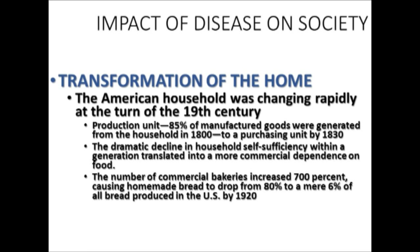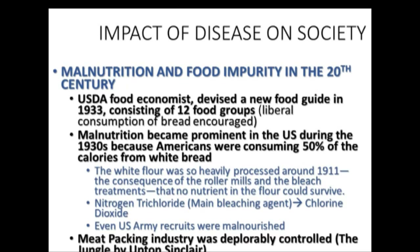The dramatic decline in household self-sufficiency translated into a more commercial dependency on food. The number of commercial bakeries increased 700%, causing homemade bread to drop from 80% to a mere 6% of all bread produced in the United States by 1920. Malnutrition was beginning to spread across the United States. At the beginning of the 20th century, USDA food economists devised a new food guide of 12 food groups recommending liberal consumption of bread, but the mechanization of milling and production of poor-quality flour created a disaster.